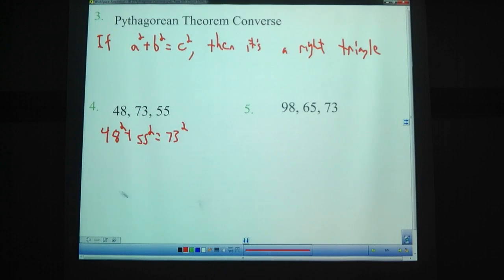48 squared, that's 2,304. 55 squared, that is 3,025. 73 squared, 5,329. Now we add these two together. 2,304 plus 3,025, that's 5,329. Since a squared plus b squared equals c squared, that means this one is a right triangle.